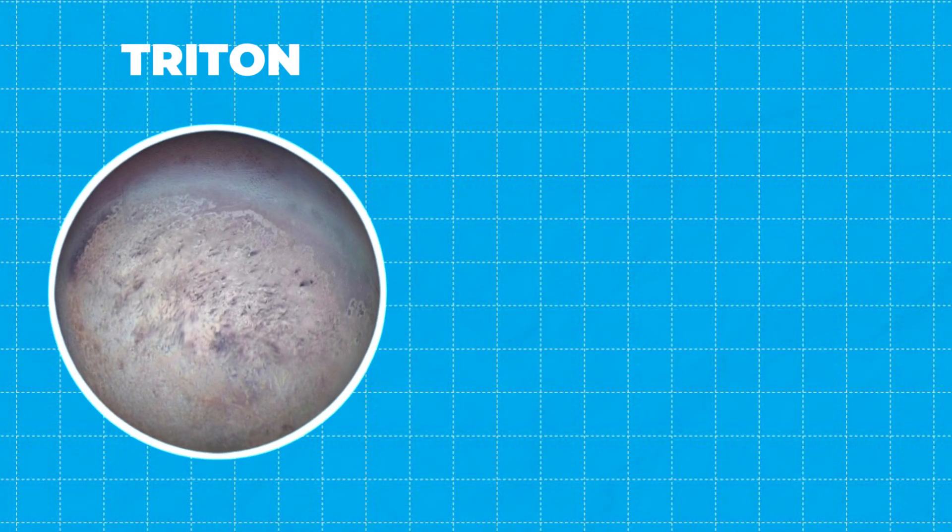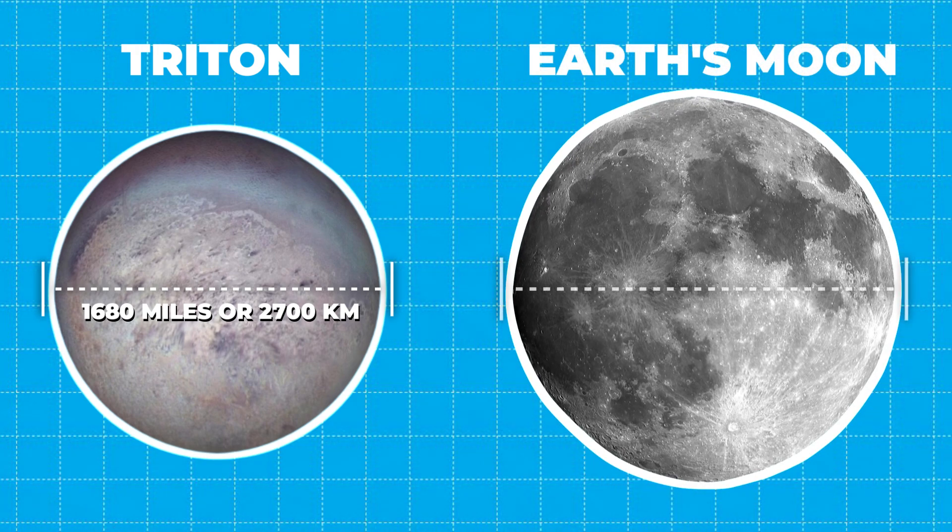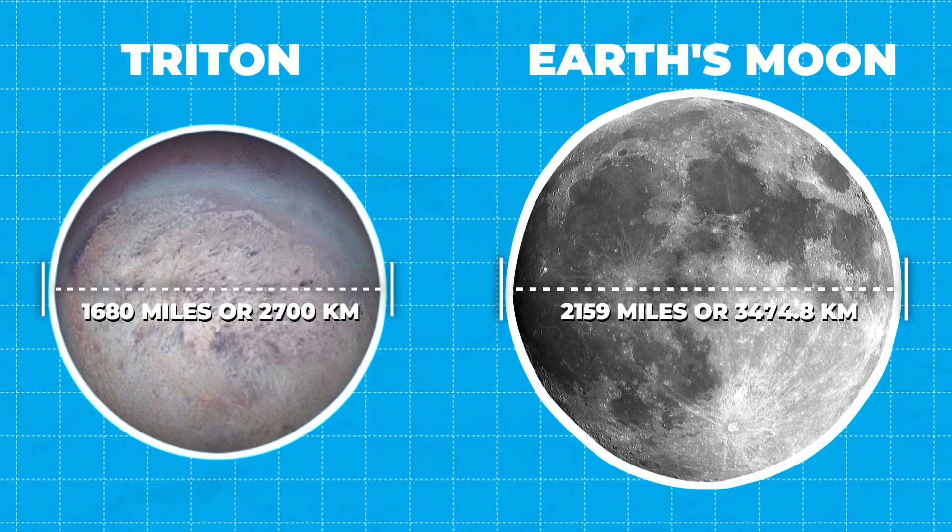Triton, Neptune's largest moon, is slightly smaller than Earth's moon, with a diameter of 1,680 miles, or 2,700 kilometers, while our moon has a diameter of about 2,159 miles, or 3,474.8 kilometers.